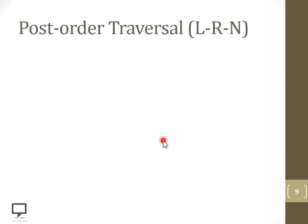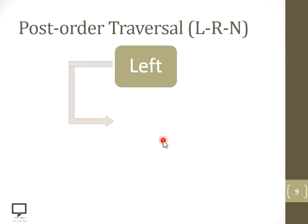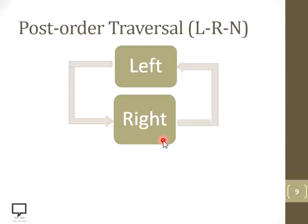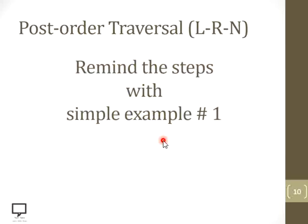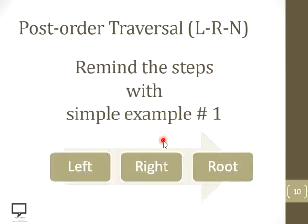Here I am explaining the sequence of steps to follow. After starting with a root node, check for a left child. If it has a left child, keep checking for left children until you reach the leftmost child. After processing the left child, check for a right child. If present, make it the root node and check its left child again. Continue this until both left and right children are processed, then process the root node.